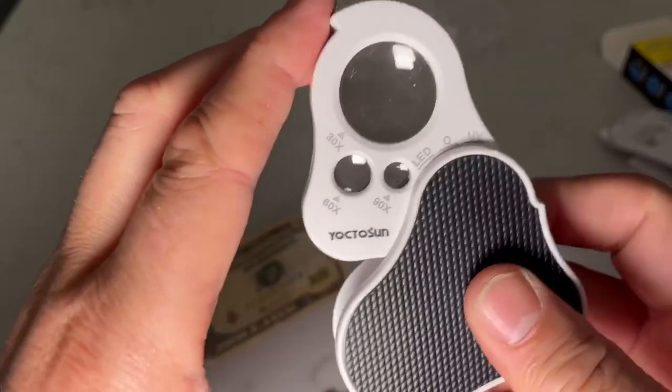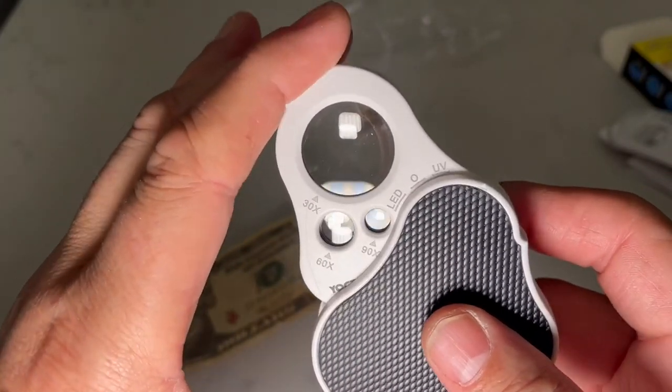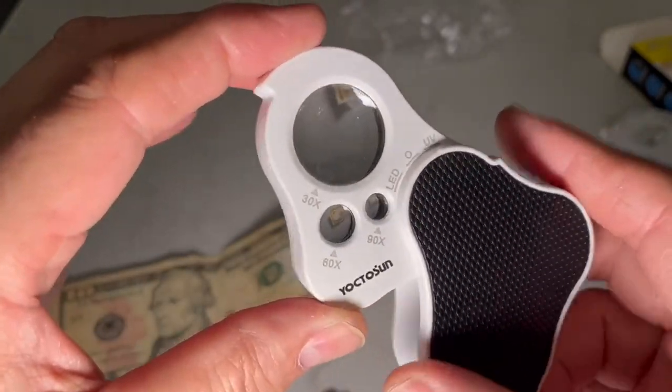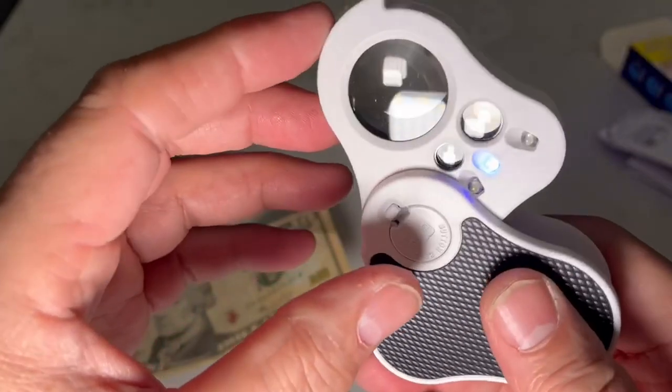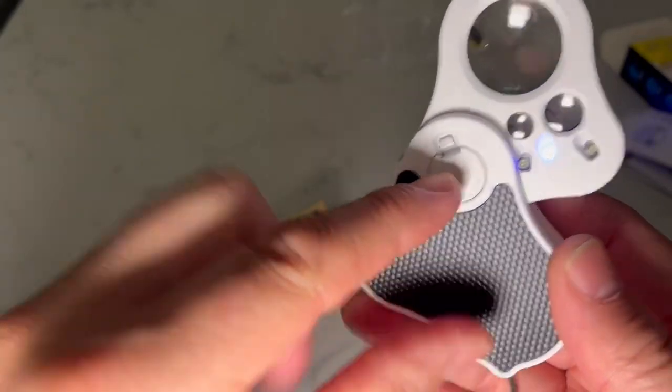But all in all, I'm very happy with it. It's very powerful. I like that it has a LED and a UV. You know, for the UV, you could look at your moles and stuff like that on your skin and see if you think they're suspicious or whatever. This is the battery compartment.